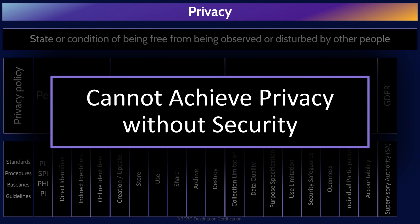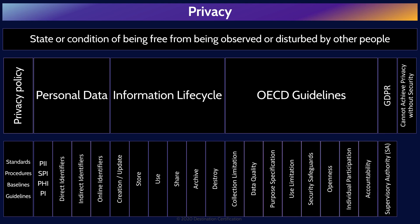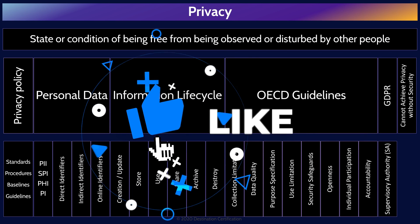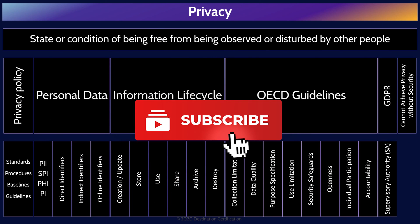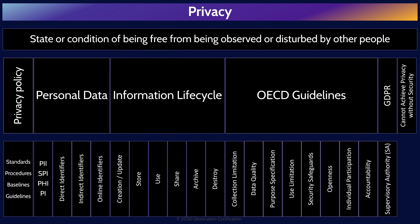The final piece related to privacy is that you cannot achieve privacy without security. Privacy requires that we, as security professionals, implement the myriad of security controls to provide confidentiality, integrity, and availability of personal data. And that is an overview of privacy within Domain 2, covering the most critical concepts to know for the exam. If you found this video helpful, you can hit the thumbs up button. If you want to be notified when we release additional videos in this mind map series, please subscribe and hit the bell icon to get notifications. I'll provide links to the other mind map videos in the description below. Thanks very much for watching, and all the best in your studies.